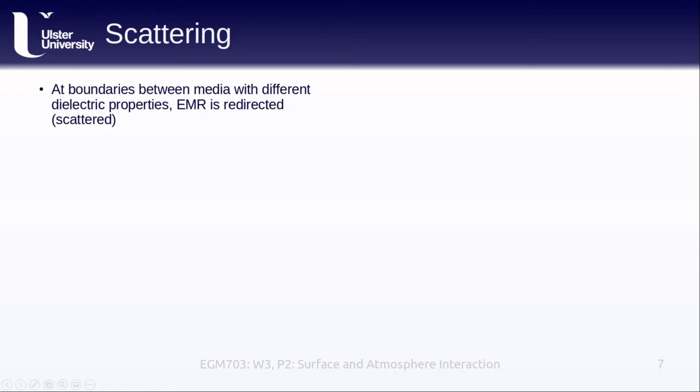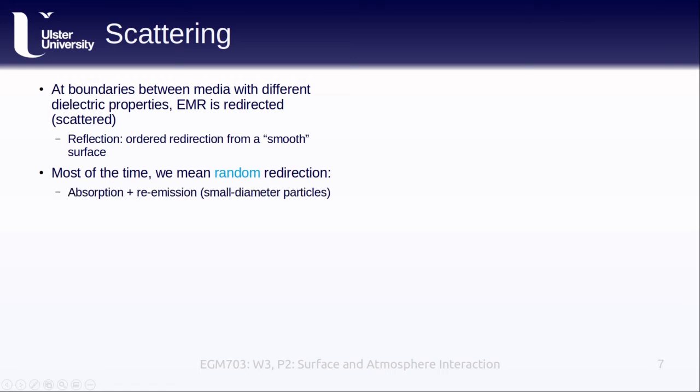At boundaries between media that have different dielectric properties, electromagnetic radiation is somehow redirected or scattered. For example, the ordered redirection of electromagnetic radiation from a smooth surface is something that we've seen quite a lot. Most of the time when we talk about scattering, we mean a random redirection of electromagnetic radiation. For example, this could be through absorption and re-emission of radiation for small diameter particles, or it can mean physical scattering of radiation for larger particles.